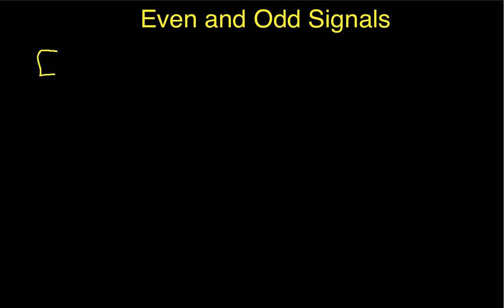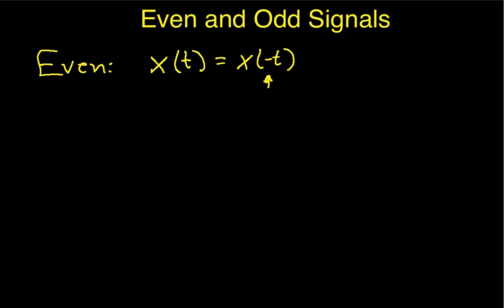So we'll start with the definition. An even signal is one for which x(t) is equal to x(−t). Multiplying t by a negative sign is equivalent to taking a time signal and flipping it about the point where t is equal to zero.